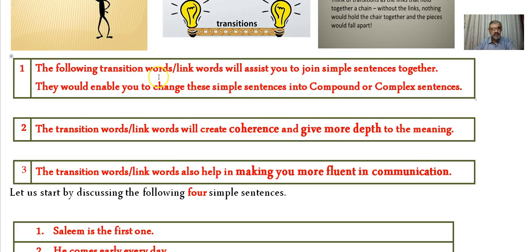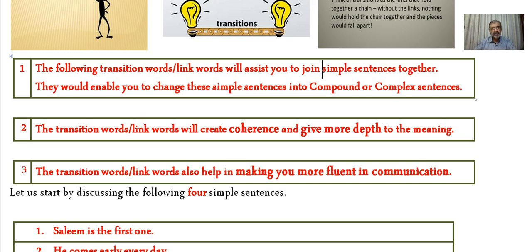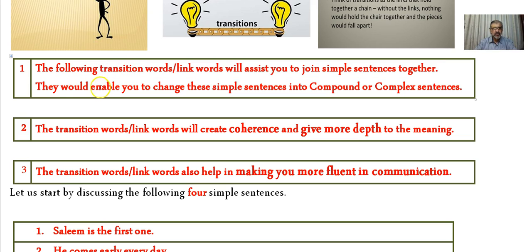These transitions or link words will assist you to join simple sentences together. I believe the core component in English writing and communication is the simple sentence. If you master writing and communicating using simple sentences, you will be able to proceed smoothly. Transitions and link words will assist you to join simple sentences together and change them into compound and complex sentences.